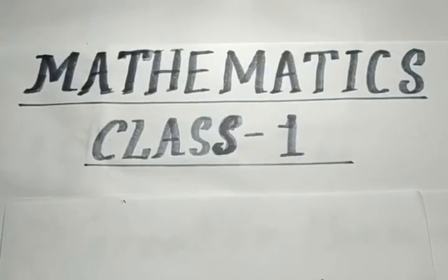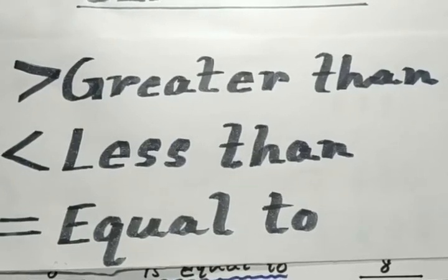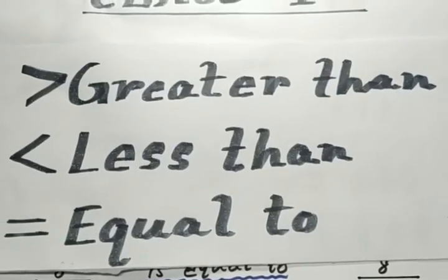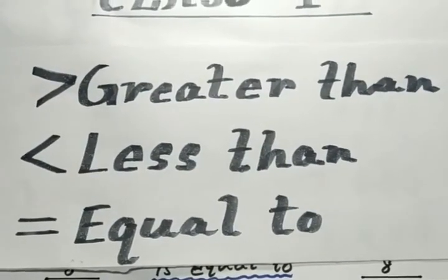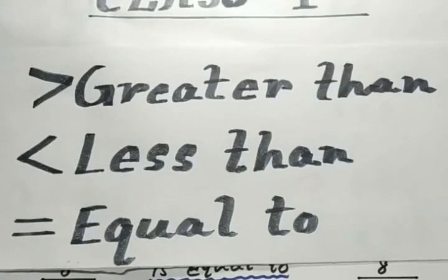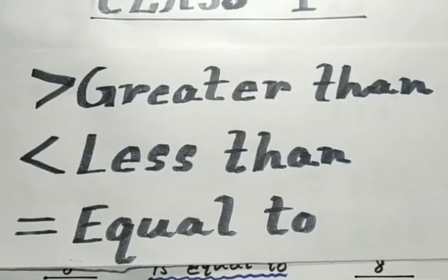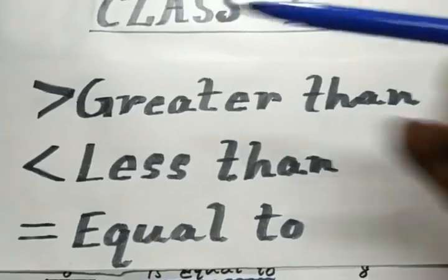Mathematics for class one. Today we are going to learn about greater than, less than, and equal to. Here are the symbols which we are going to use to compare the numbers. The easiest way to remember is that the open side of the sign always faces towards the bigger number.